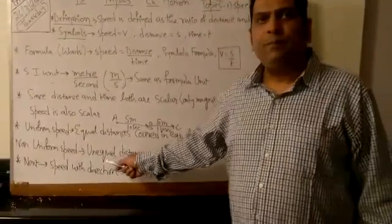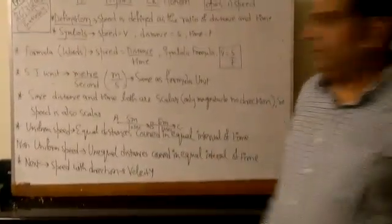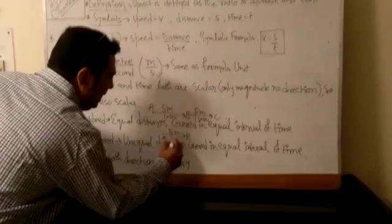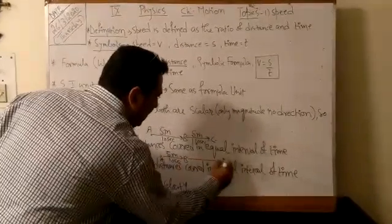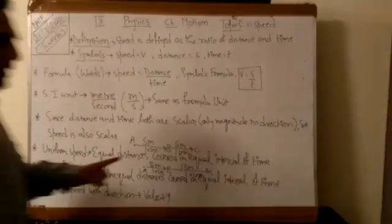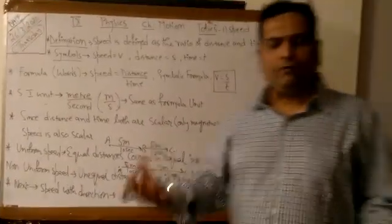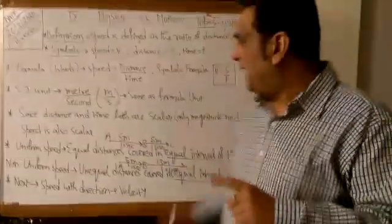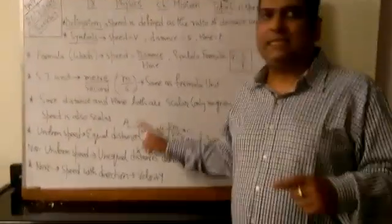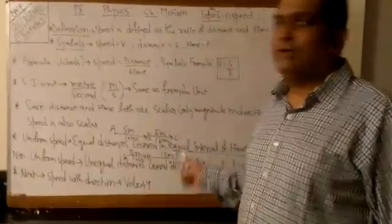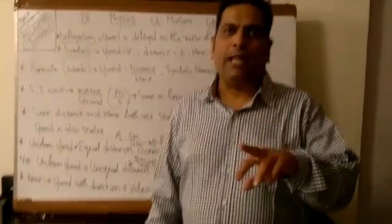Non-uniform speed is when unequal distances are covered in equal intervals of time. For example, from point A to point B it is 5 meters in 10 seconds, but from point B to C it is 13 meters in 10 seconds — that is non-uniform speed. The common factor between uniform and non-uniform speed is the time interval, which is always equal. The difference is the distance: in uniform speed all distances are equal, in non-uniform speed the distances are unequal.